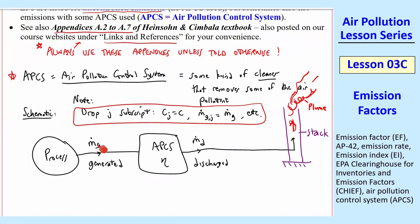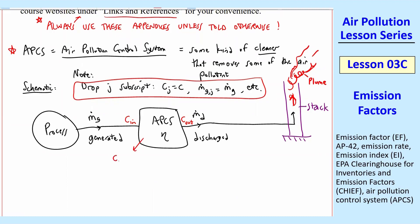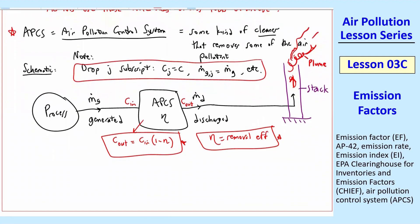Here's the schematic: we have some process that produces M-dot_G (the generated mass flow rate), which we get from the emission factor. That goes through an air pollution control system with cleaner removal efficiency eta, and then we have a discharged rate M-dot_D that goes up into the stack — which is just another name for a smokestack or chimney — and then into a plume in the air. For any APCS, C_out equals C_in times (1 minus eta). Similarly, M-dot_D equals (1 minus eta) times M-dot_G.